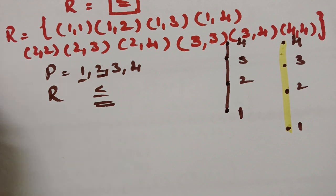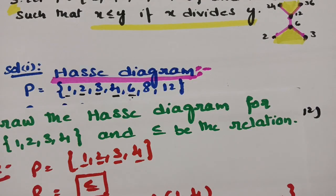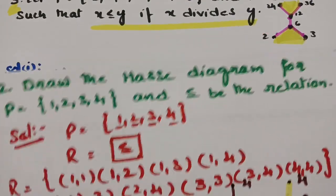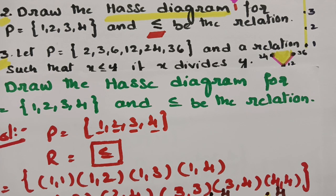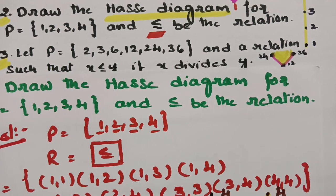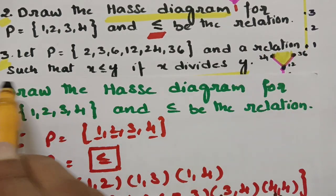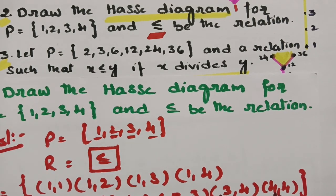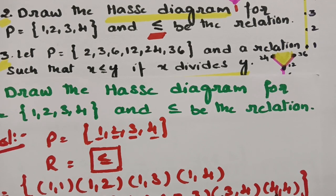The third question: P is given as {2, 3, 6, 12, 24, 36}. The relation is x ≤ y if x divides y. So there are two properties that must hold: x should be less than or equal to y, and x should divide y.